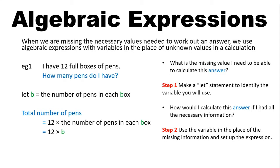And in algebra, we try to simplify our expressions as much as possible. When we have a number multiplied by a letter, we could just write them together: 12B.